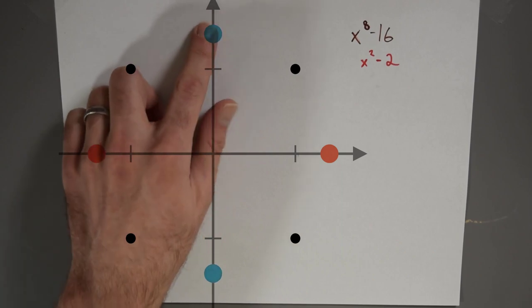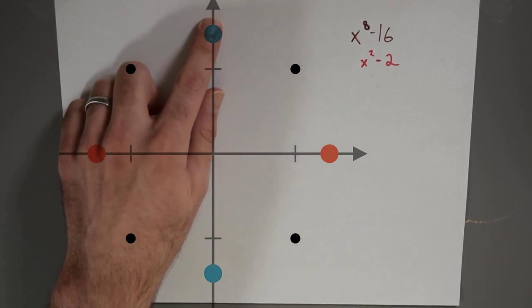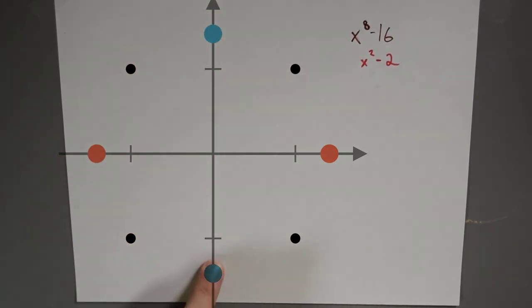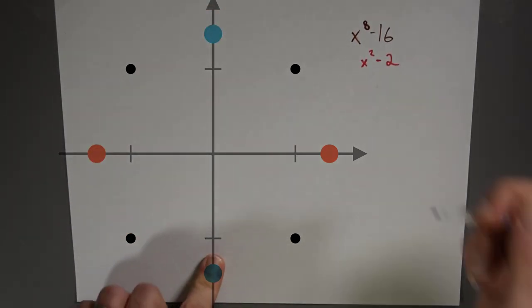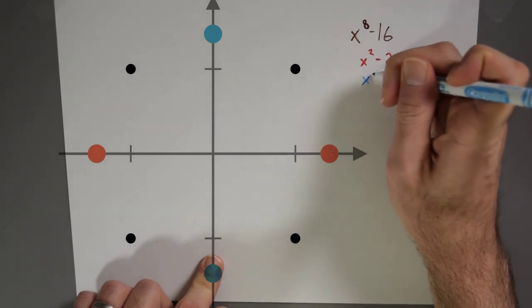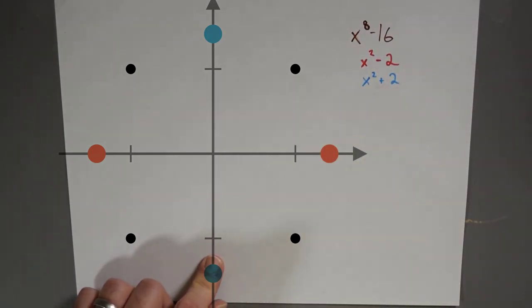And then here in blue, I've got the two pure imaginary roots of x to the 8th minus 16. So that gives me a term x squared plus 2.